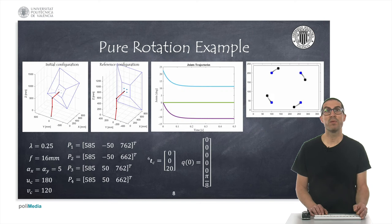In this example, we analyze the case of a pure rotation with a robot with six degrees of freedom, which corresponds to the ABB IRB-140 model that we've seen in previous examples. The robot is positioned in an initial configuration as indicated in the figure on the left and observes points in the image shown on the right, marked as black crosses.